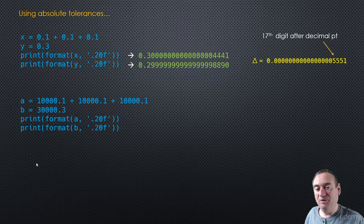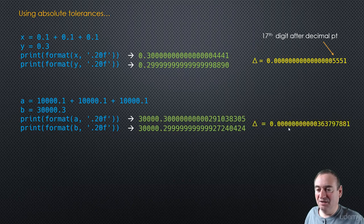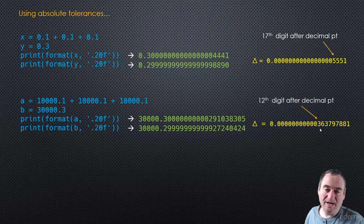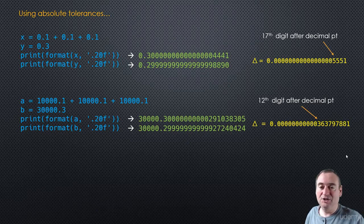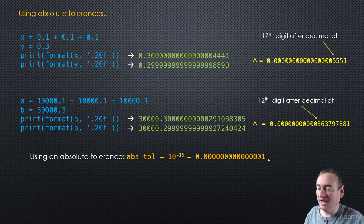Let's take a look at another example where a and b are the variables, and we're looking at 10,000.1 plus 10,000.1 and so on, and then b is 30,000.3. Technically, we would expect a to equal b. Now if we print those numbers out with more precision, the difference between the two is this small number where that digit 3 is the 12th digit after the decimal point. Let's say we had defined a tolerance to be 10 to the minus 15, because when you use an absolute tolerance, you can't change that tolerance as the numbers for a and b or x and y change — you're keeping the same tolerance.